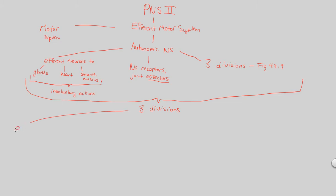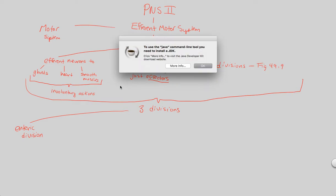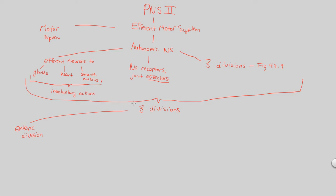The first division to highlight is the enteric division. This is a part of the autonomic nervous system, which is part of the efferent motor system, which is part of the peripheral nervous system, which is part of the nervous system as a whole — a very complex organization seen in vertebrates. The enteric division is in control of the digestive tract, specifically controlling two main components: the pancreas and the gallbladder. Both are integral parts of digestion, and thus the enteric division involuntarily controls the digestive tract.